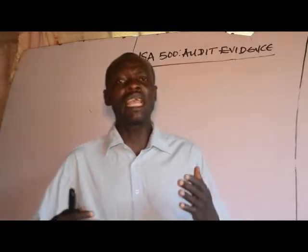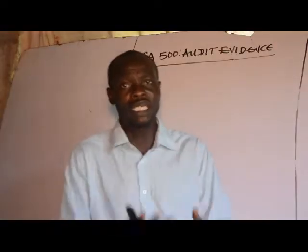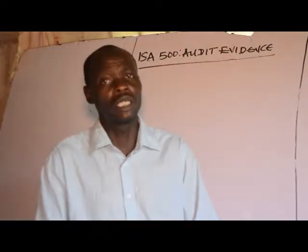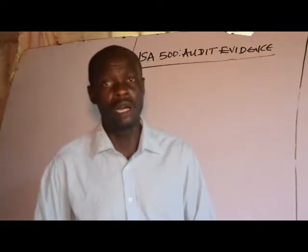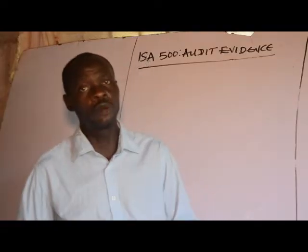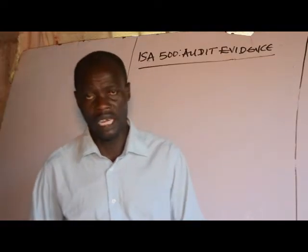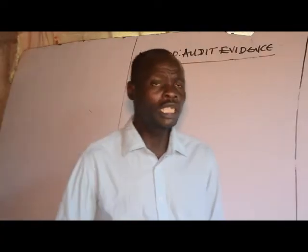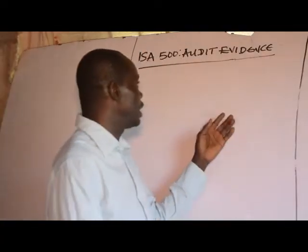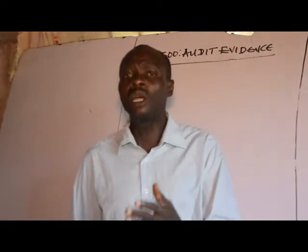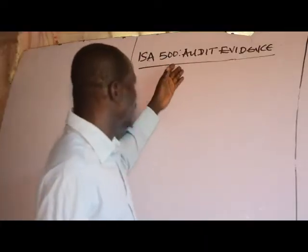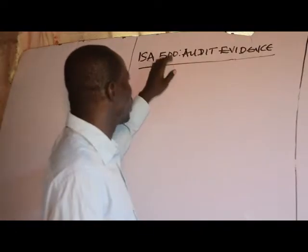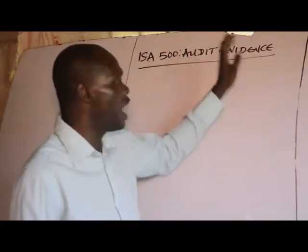Auditors rely on information obtained in the course of an audit when forming an opinion on the true and fair view of the financial statements. Those pieces of information obtained upon which the audit opinion was formed are called Audit Evidence.